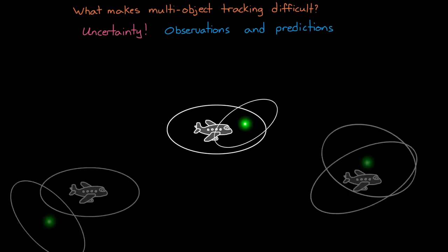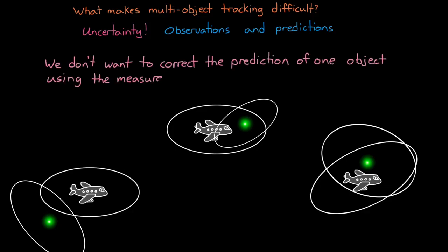But now, instead of a single object, we have lots of objects. Each with their own uncertain prediction that we need to correct with its corresponding uncertain measurement. So already we come to our first problem. We don't want to correct a prediction of one object using the measurement of another. But if there's no identifying information that comes with the detection, like an airplane tail number or some other unique signature, how do we know which object we've just detected?